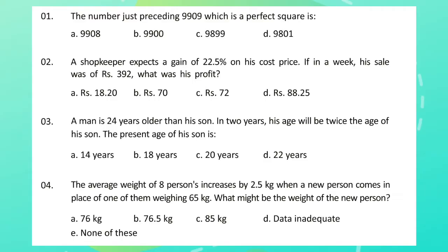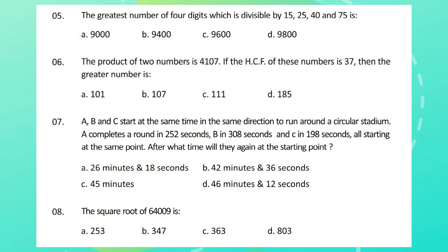Question 4: The average weight of eight persons increases by 2.5 kg when a new person comes in place of one of them weighing 65 kg. What might be the weight of the new person? Question 5: The greatest number of four digits which is divisible by 15, 25, 40, and 75 is? Question 6: The product of two numbers is 4107. If the HCF of these numbers is 37, then the greater number is?